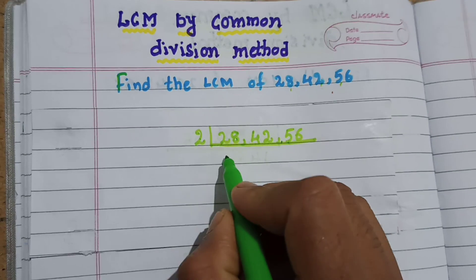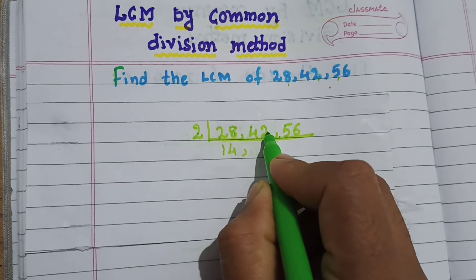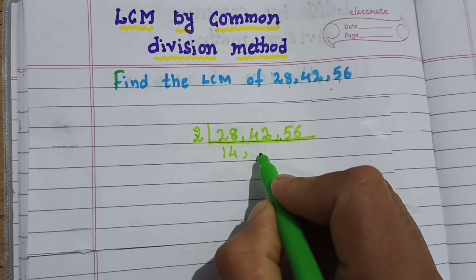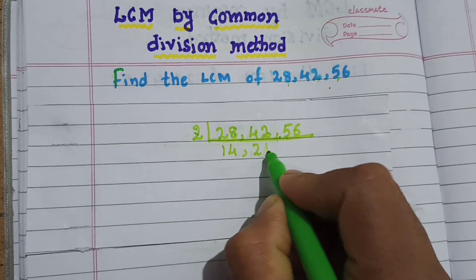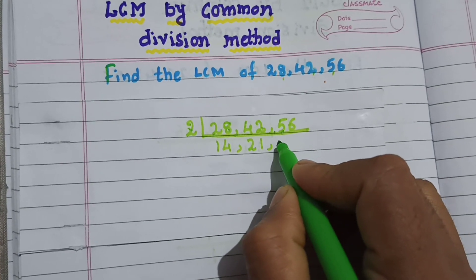28 by 2 gives me 14. 42 divided by 2 gives me 21. 56 divided by 2 gives me 28.